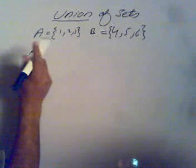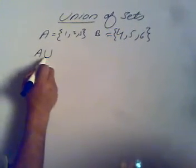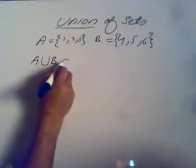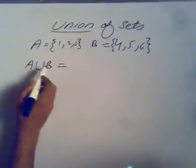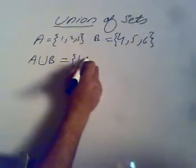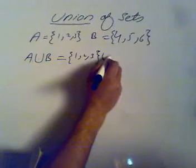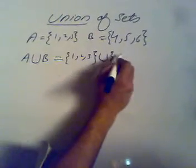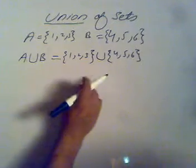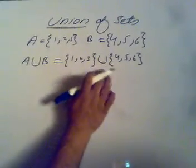I want to find A union B, and this union is denoted by a U-type shape. First we will write the value of A, which is 1, 2, 3, then we place the union sign in between, and then we write the value of B, which is 4, 5, 6. As discussed, union means to combine these two sets.